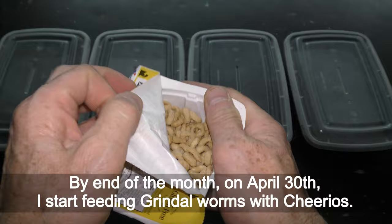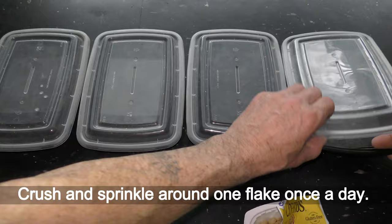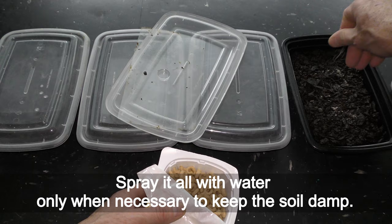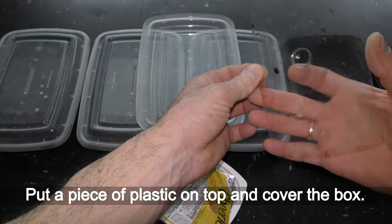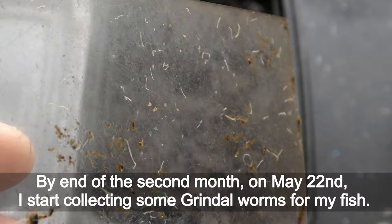By end of the month on April 20th, I start feeding grindal worms with Cheerios. Crush and sprinkle around one flake once a day. Spray it all with water only when necessary to keep the soil damp. Put a piece of plastic on top and cover the box.